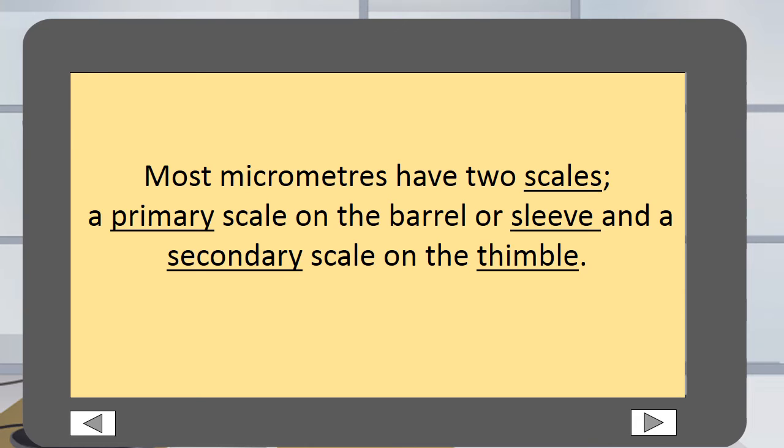Most micrometers have two scales. A primary scale on the barrel or sleeve and a secondary scale on the thimble.